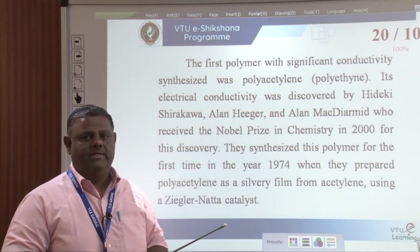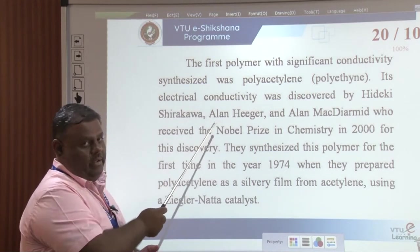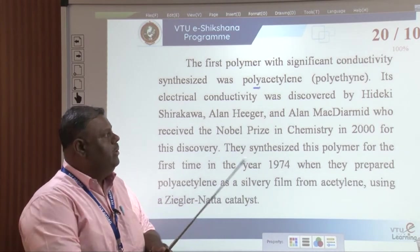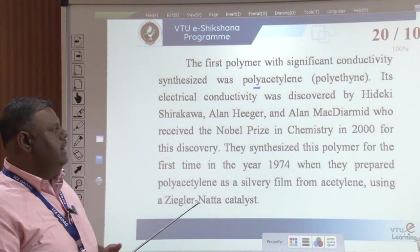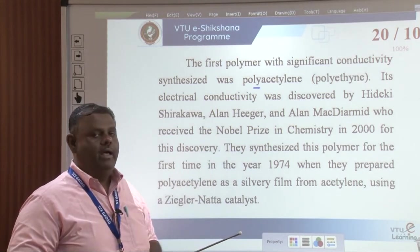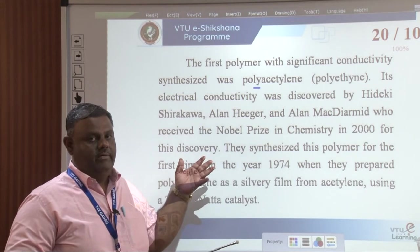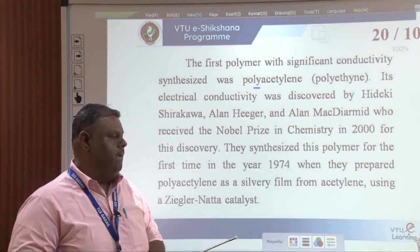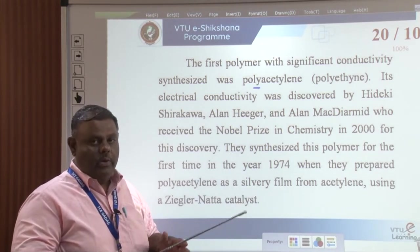The first polymer with significant conductivity was polyacetylene, also referred to as polyethyne. Its electrical conductivity was first discovered by Hideki Shirakawa, Alan Heeger, and Alan MacDiarmid, who received the Nobel Prize in Chemistry in the year 2000. Shirakawa was from Japan, while Heeger and MacDiarmid were from the USA. Heeger was a physicist and MacDiarmid and Shirakawa were chemists.